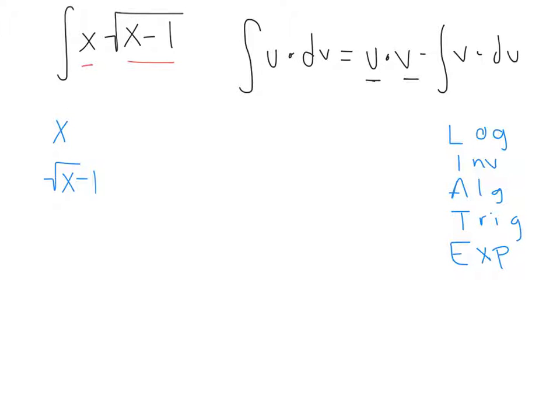Where x is an algebraic, and our radical x minus 1 would be an exponential if we were to put it to x minus 1 to the 1 half. So we can set our x as our u in this situation, since our u comes first, and our radical x minus 1 is going to be our dv.